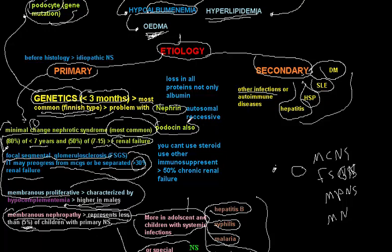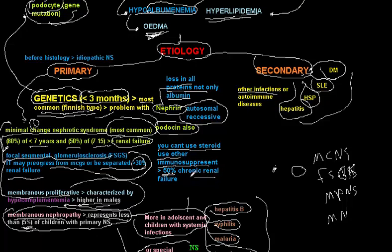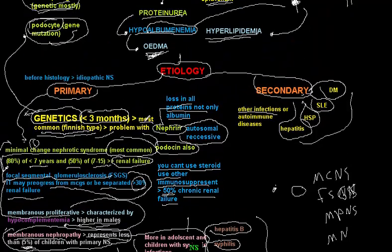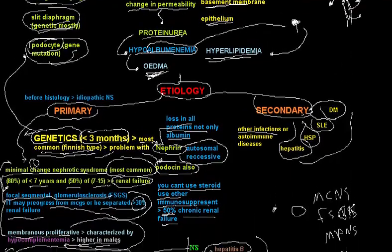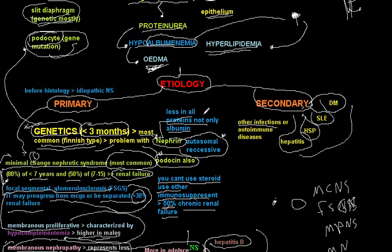In Finnish-type (genetic) nephrotic syndrome, there is a problem with nephrin or podocytes — nephrin being the most important. There is loss of all proteins, not only albumin. It is inherited as an autosomal recessive disease. In genetic nephrotic syndrome, steroids usually cannot be used; other immunosuppressants are required. It is associated with chronic renal failure in 50% or more of cases. The key points: nephrin, podocytes, autosomal recessive, loss of all proteins — not just albumin.